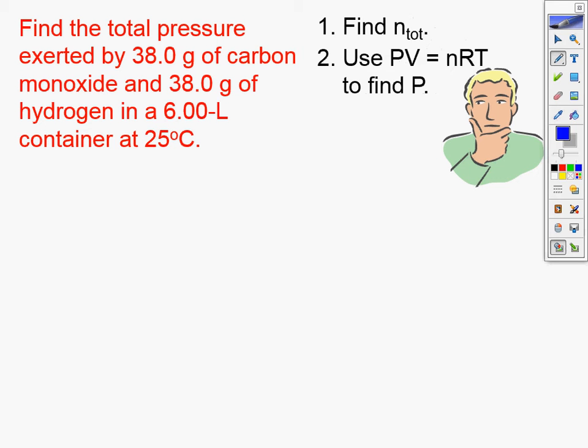All right — N total. Get your two moles: N1 plus N2. Put your two moles together first. Remember, if you do it separately, you're using six liters twice — that's not right. You need to find N total and use the six liters just once.